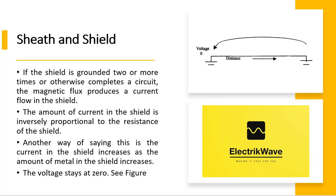If the shield is grounded two or more times, or otherwise completes a circuit, the magnetic flux produces a current flow in the shield. The amount of current in the shield is inversely proportional to the resistance of the shield. Another way of saying this is the current in the shield increases as the amount of metal in the shield increases, while the voltage stays at zero.